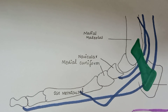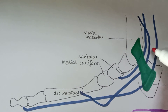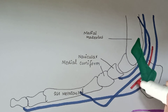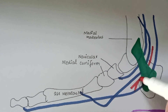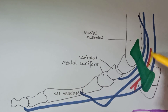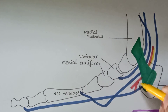The structures that pass deep to the flexor retinaculum are the posterior tibial artery and the tibial nerve. This is the posterior tibial artery, and this is the posterior tibial nerve.